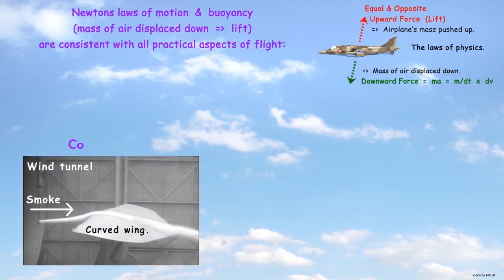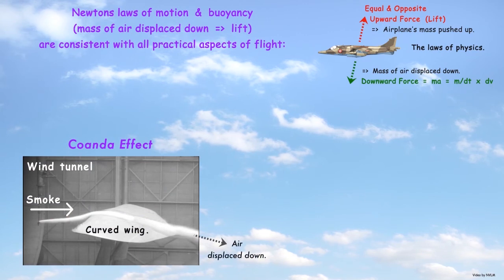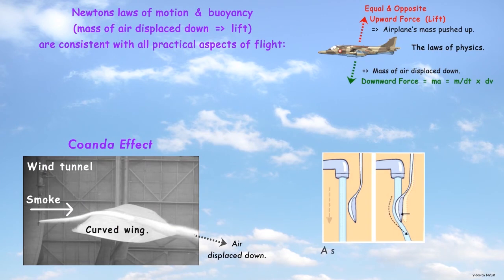Air flow will naturally follow a curved surface due to the Coandă effect. This helps to explain how the top side of the wing can redirect the upper airflow downwards.